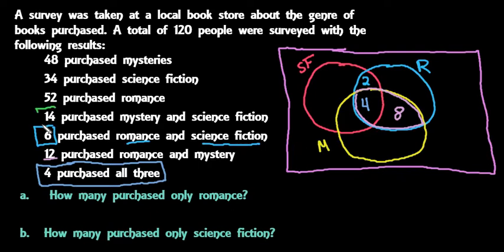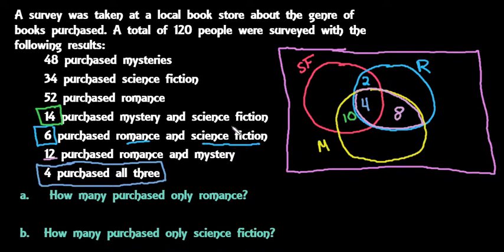14 purchased mystery and science fiction. In this overlap area we need a total of 14. We already have 4 that purchased all three, so 14 minus 4 gives us 10 who purchased mystery and science fiction but not romance.